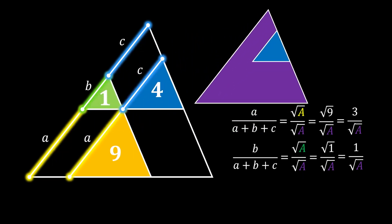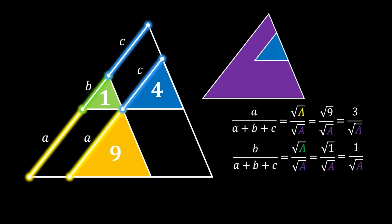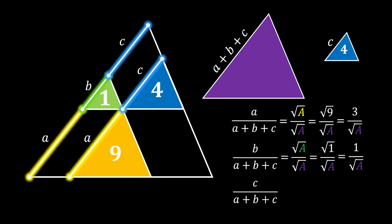Finally, let's look at the big triangle and our right inscribed triangle. Those two are similar as well, so we can use the same rule. Since we know that the area of our blue triangle is equal to 4, we can substitute this value and get that this relation is equal to 2 over the square root of the area of our big triangle.